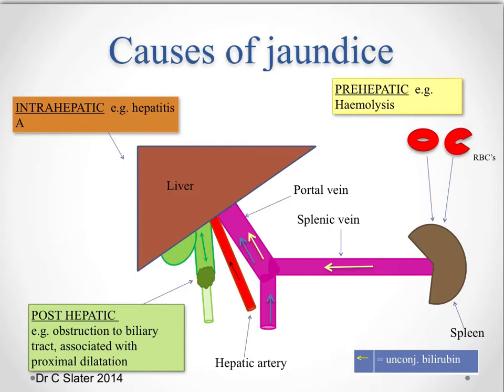Jaundice is a very common problem associated with liver disease, and may present clinically with a yellow discoloration of the skin or yellow discoloration of the sclera of the eye. It can also be seen underneath the tongue — if one asks a patient to lift up their tongue and view it from underneath, you can see the yellow discoloration there, which is a helpful sign in very pigmented people.